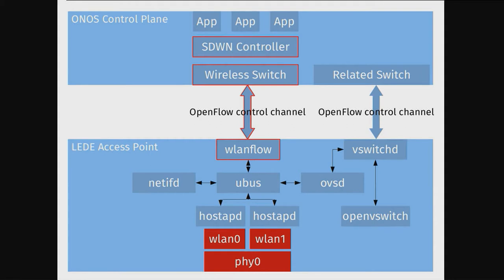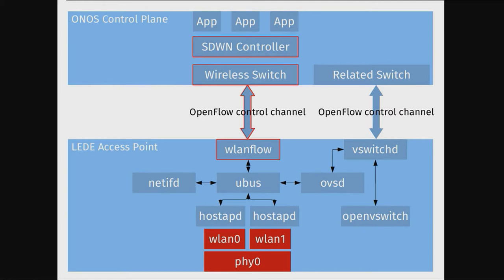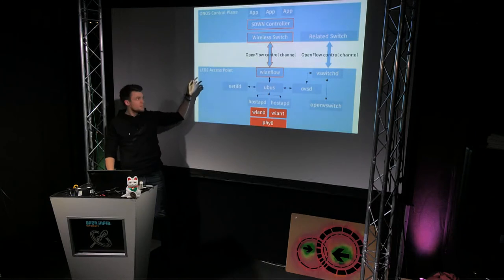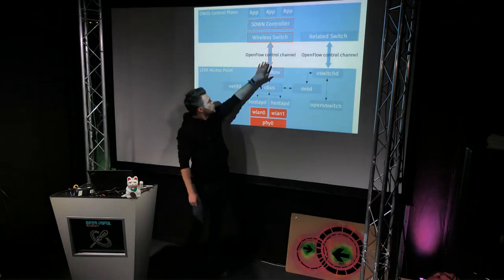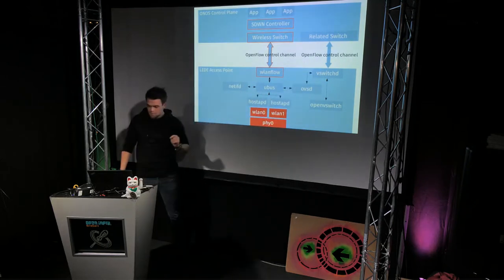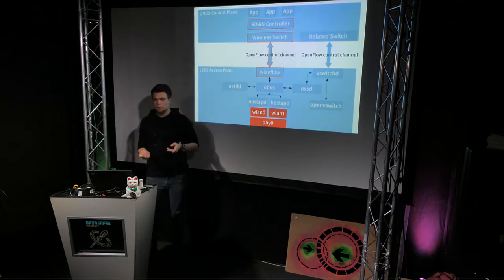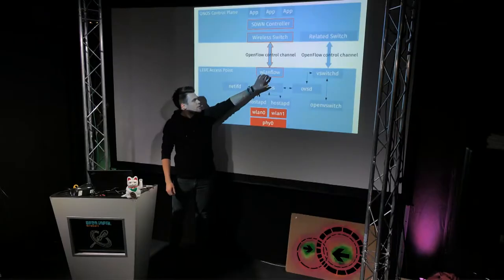I have only one slide and I'll treat this like a poster talk. At the top is the control plane — a centralized server — and at the bottom is the setup of one node in your network: your LEDE/OpenWRT access point, connected to the controller through a control channel. If you want to manage access points from a central controller, the controller needs to know a lot about these access points, which is why I wrote what I call 'the agent'.